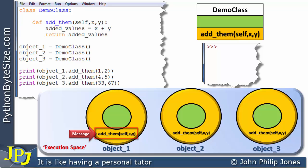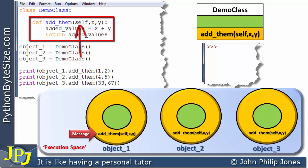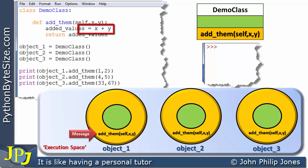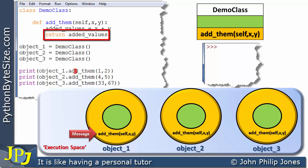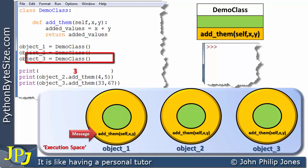So here we can see the runtime area, and what we can see is that this particular line is going to result in this particular message, and this message is going to cause this instance method to execute. Self will receive the ID of this object, x will receive this 1, and y will receive this 2. Coming up to the definition, self has received the ID of the object, x will have received 1, and y will have received 2. On this particular line here, we will add up 1 and 2, which gives us 3 — I have that 3 appearing here. That 3 is assigned to 'added_values', then we return the 3, and the 3 gets printed to the screen, as you can see here. Then this particular program statement finishes.